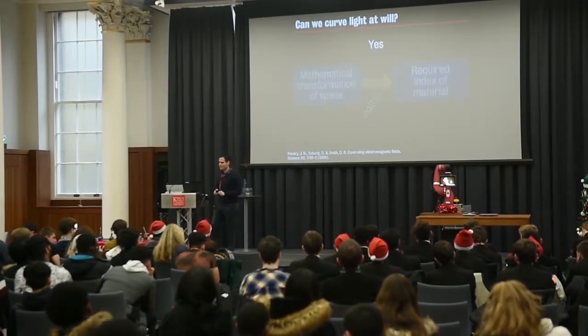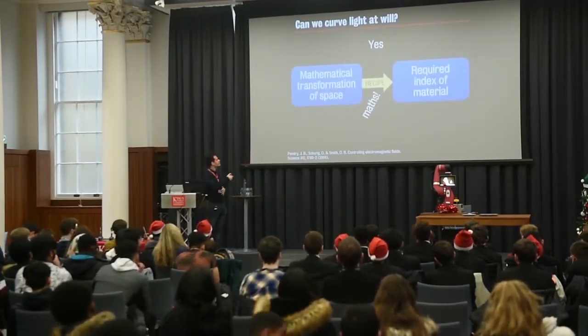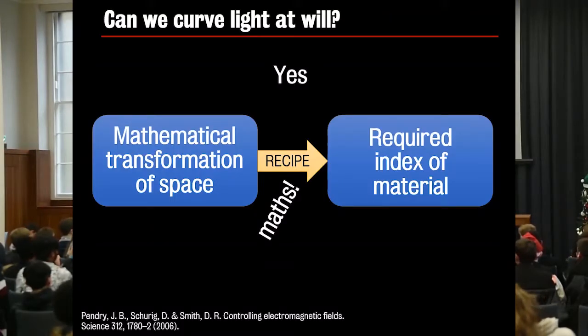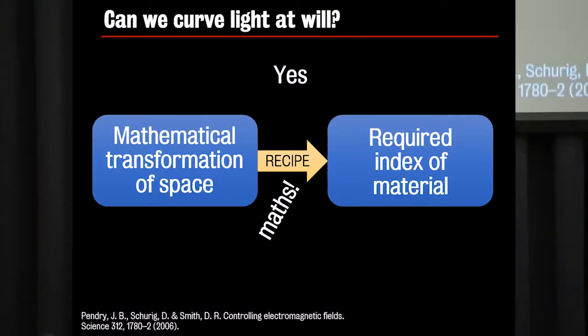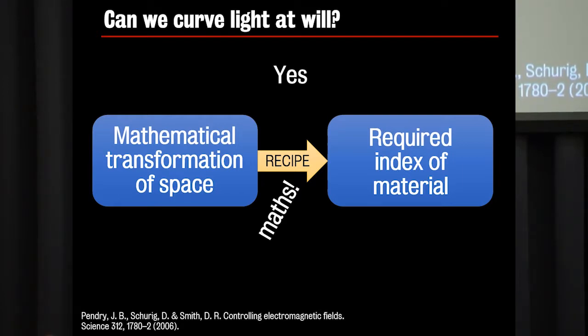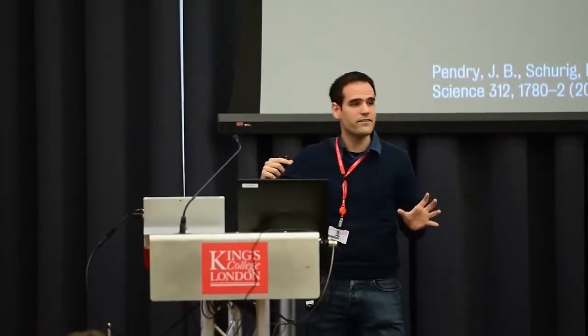So to summarize all those maths, this is what these maths are doing. You have a mathematical transformation of space, which I will explain in a second. And the maths are like a recipe that tells you what's the required refractive index that you need to put in a material to get the curves, to get the rays of light curving in the way you want them.